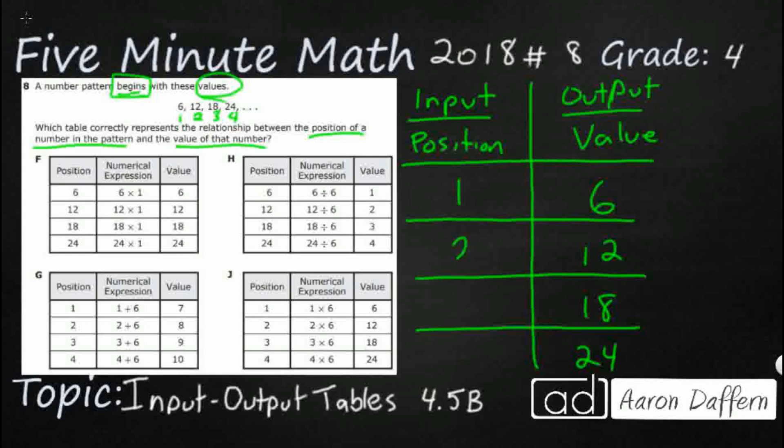So that first 6 is going to be in the first position. That 12 is going to be in the second position. That 18 is going to be in the third position. And that 24 is going to be in the fourth position. So there's our input-output table based on the position and the value.